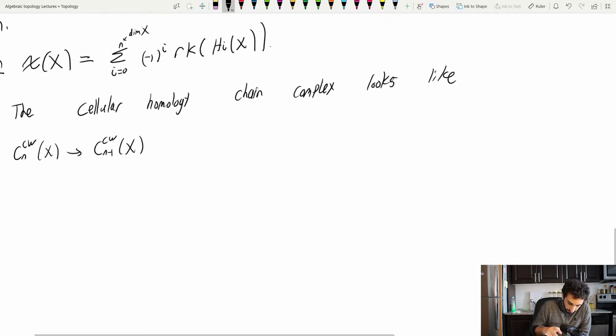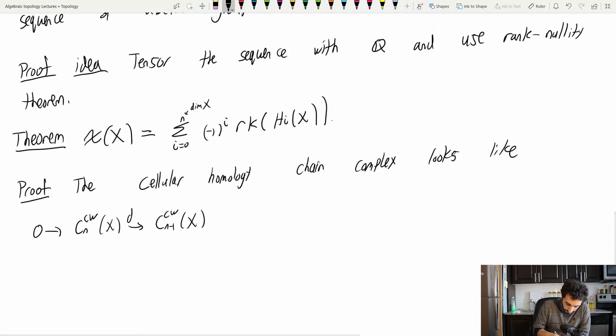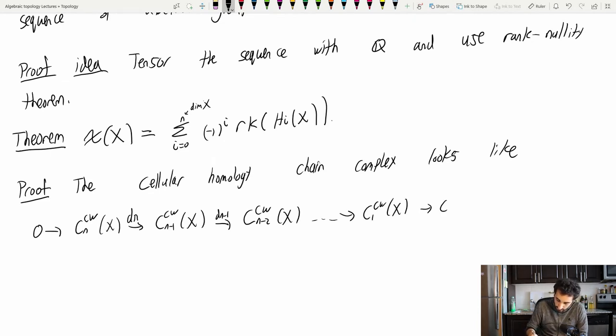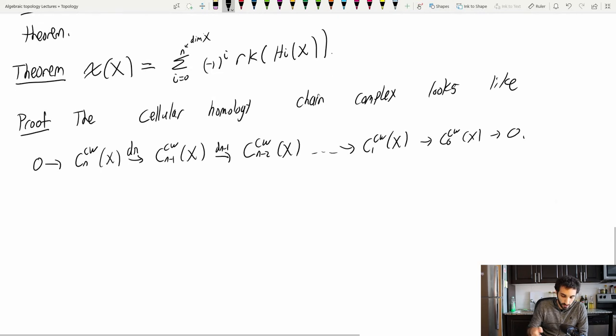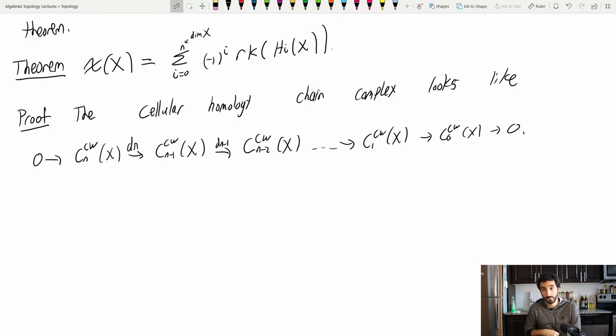X looks like 0 at the very top goes to CN CW of X goes to CN minus one CW of X. And I'll be calling this one dN comes down with dN minus one to CN minus two CW of X, so on and so forth, all the way up to C1 CW of X down to C0 CW of X to 0.